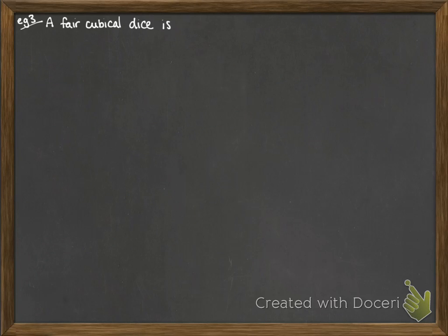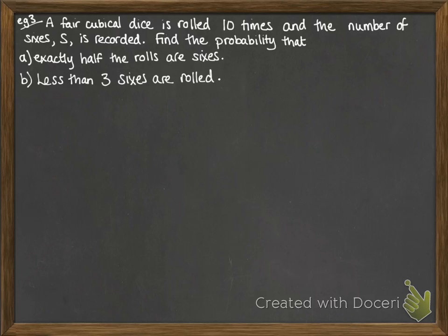OK, finally, a worded question. We've got a fair cubical dice, so a normal dice. It's rolled 10 times. The number of 6s, S, is recorded. We want to find the probability that exactly half of the rolls are 6s and less than 3 sixes are rolled. So let's just write down what it looks like. S follows a binomial distribution. S is counting how many 6s we have. We're trialling it out 10 times. And the probability of success is 1/6. We know it's binomial because it fits all of those four rules we talked about at the beginning. We have a fixed number of trials, 10. The probability of success is constant. The trials are independent of each other. So when you roll a 6, it doesn't affect whether you roll a 6 the next time. And the outcomes can be determined as success or failure.